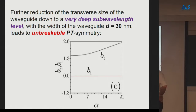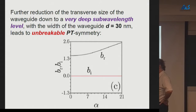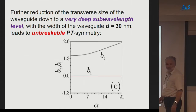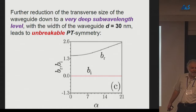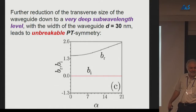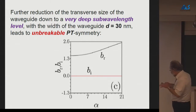Decreasing the channel width further by another factor of 2 to roughly one-twentieth of the wavelength, we find endless PT symmetry: no breaking takes place at all. The imaginary part of the propagation constant always remained exactly zero for all values of alpha studied, giving a purely real propagation constant — apparently unbreakable PT symmetry in this very deeply sub-wavelength regime. Proceeding from the paraxial approximation to the deeply sub-wavelength regime, PT symmetry tends to become much more robust.